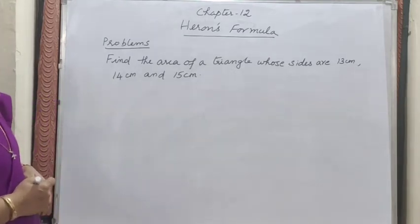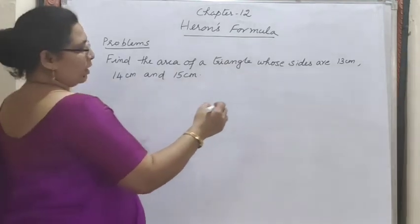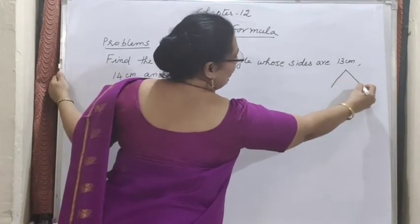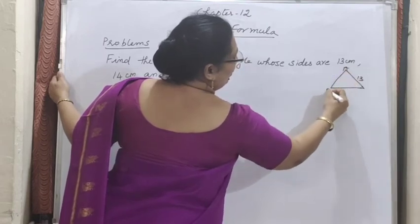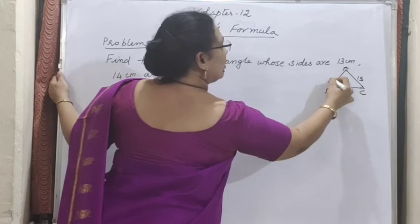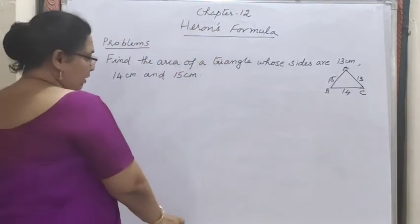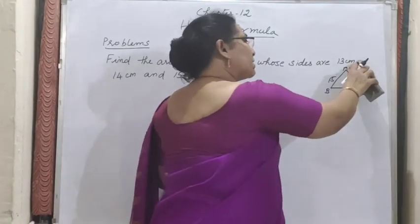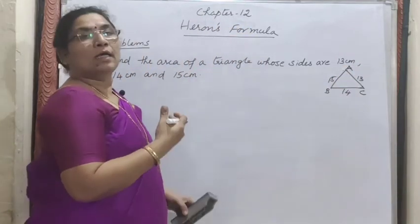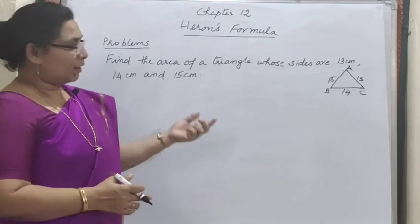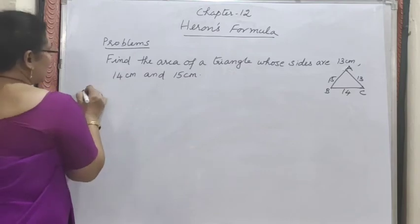Problem 1: Find the area of the triangle whose sides are 13 cm, 14 cm, and 15 cm. A triangle is given with all three side lengths provided. We assign A = 13, B = 14, C = 15 — any order can be taken. The corresponding height is not given in this question, so we use Heron's formula. Let us now see the solution steps.